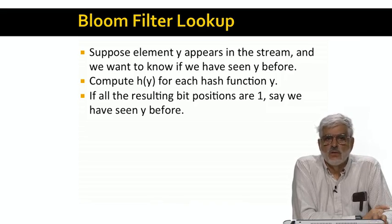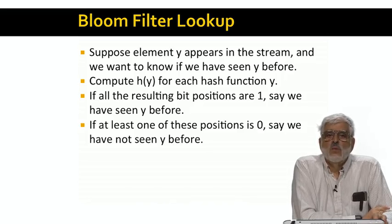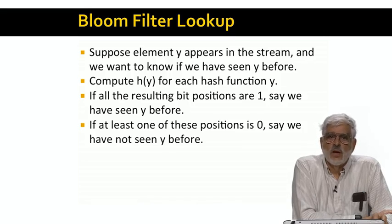Unfortunately, there can be false positives, since it could be that we never saw y, but some other combination of elements managed to turn on all the bits that y would turn on. If one or more of the bits are 0, then we'll say y was never seen. That's surely correct, since we know that each would have been set to 1 if y had been seen. That is, there are no false negatives.